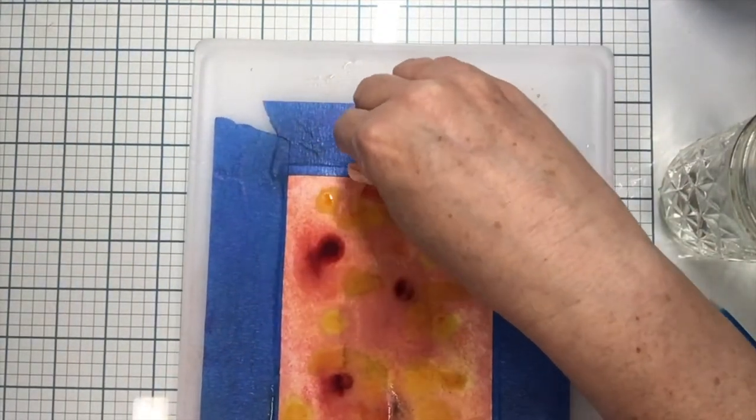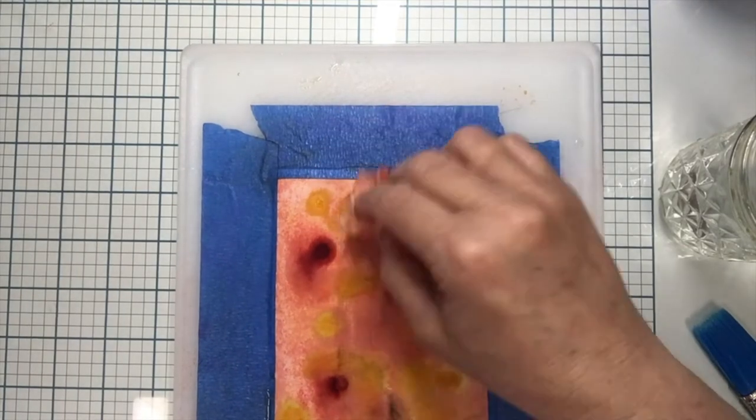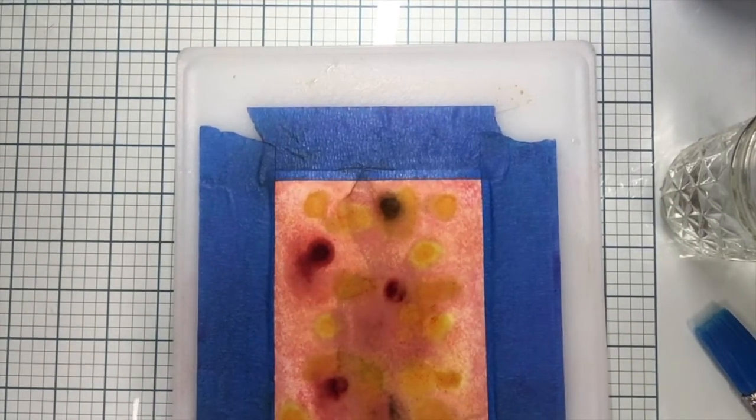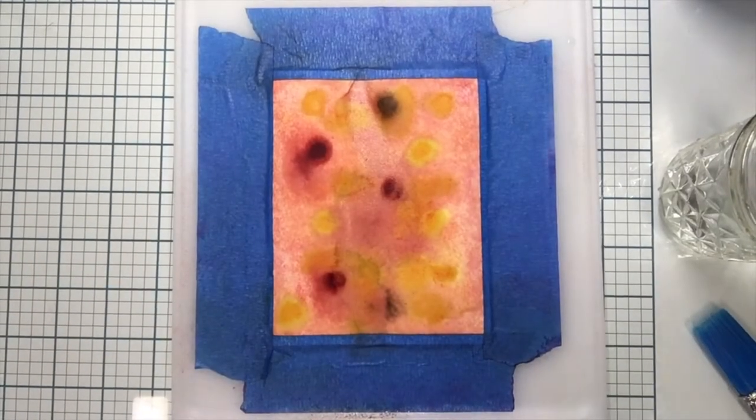Once I'm done I just kind of wipe off around the outer edge and real lightly dab to help dry it out a little bit, but that is very wet right now. So we just need to sit it aside and let it dry.